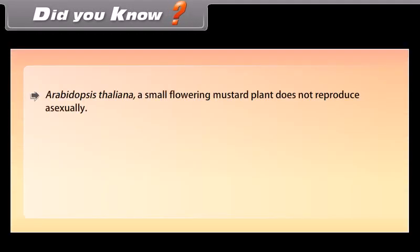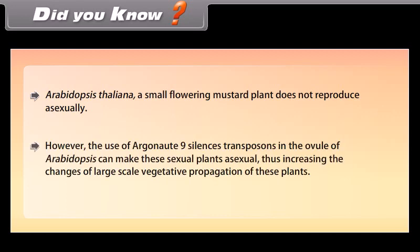Did you know? Arabidopsis thaliana, a small flowering mustard plant, does not reproduce asexually. However, the use of Argonaute 9 to silence transposons in the ovule of Arabidopsis can make these sexual plants asexual, thus increasing the chances of large-scale vegetative propagation of these plants.